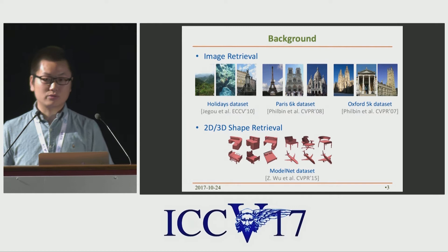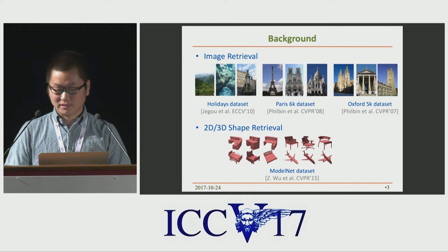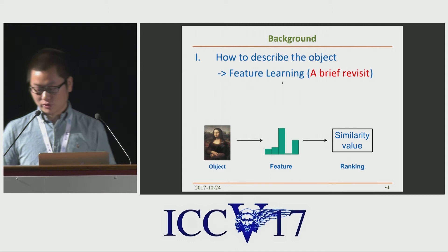Here are some popular datasets which can be used for retrieval, such as Holidays, Paris, Oxford, and the ModelNet. The first key point in object retrieval is how to describe the object, which is a feature learning issue.